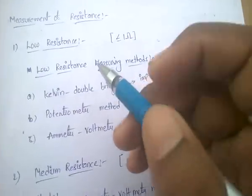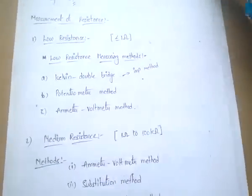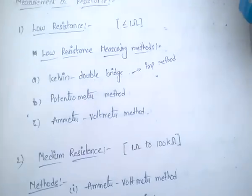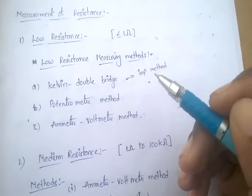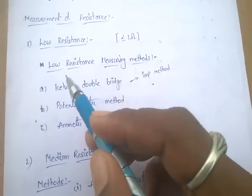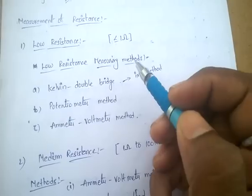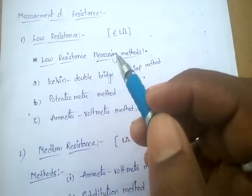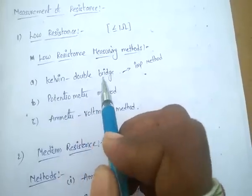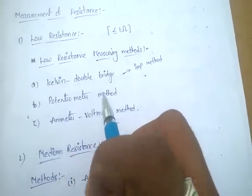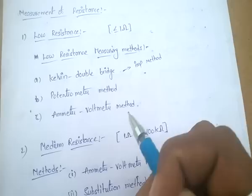Coming to low resistance measuring methods — there are mainly three types of methods. First one is Kelvin double bridge, second one is potentiometer method, and third is ammeter-voltmeter method.